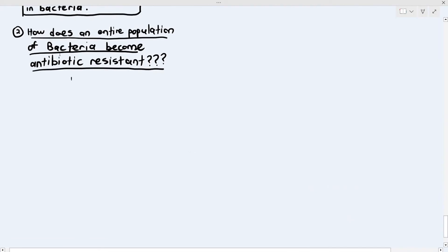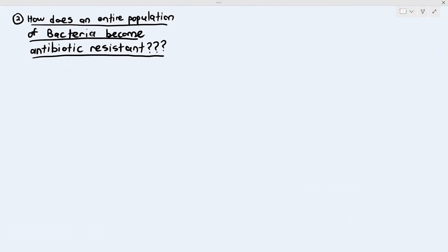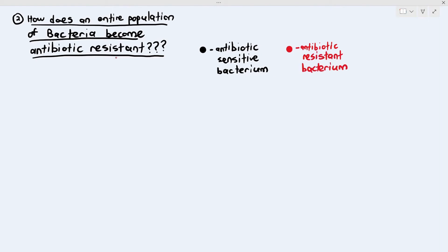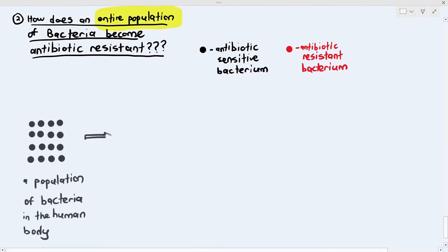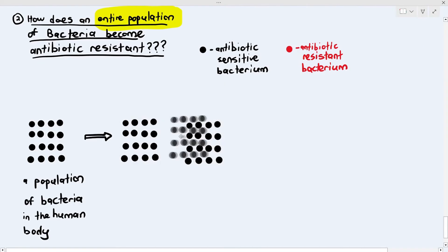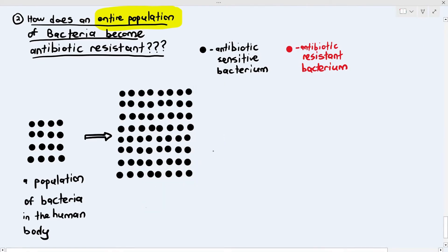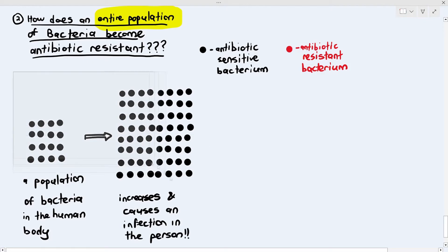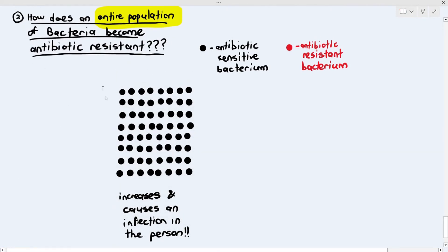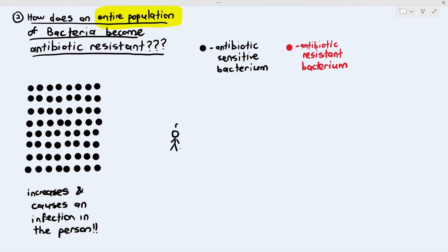To explain how an entire population becomes resistant: antibiotic sensitive bacteria are black dots, resistant bacteria are red dots. Notice the population in the human body — all black, all sensitive. They increase by binary fission and cause an infection. The person is now sick and goes to the hospital, where the doctor prescribes a course of antibiotics — meaning they must take them for several days.